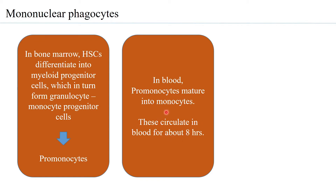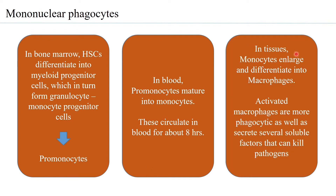Monocytes circulate in the blood for about eight hours, looking for foreign particles. In tissues, monocytes enlarge and differentiate into macrophages. These macrophages, on getting exposed to an antigen or through growth factors and cytokines, are activated and become even more phagocytic than the monocytes.